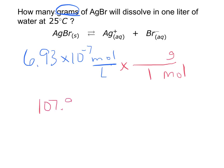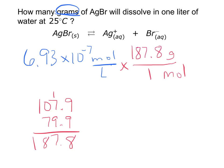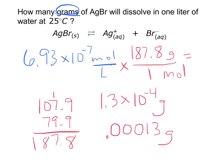Ag is 107.9 and Br is 79.9. Adding those up gives 187.8 grams per mole. So 6.93 times 10 to the negative 7 times 187.8 grams equals 1.3 times 10 to the negative 4 grams, which is 0.00013 grams. If you saw 0.00013 grams dissolve in a whole liter of water, you would call that insoluble — but it is technically a little bit soluble, and that's what these problems are about.